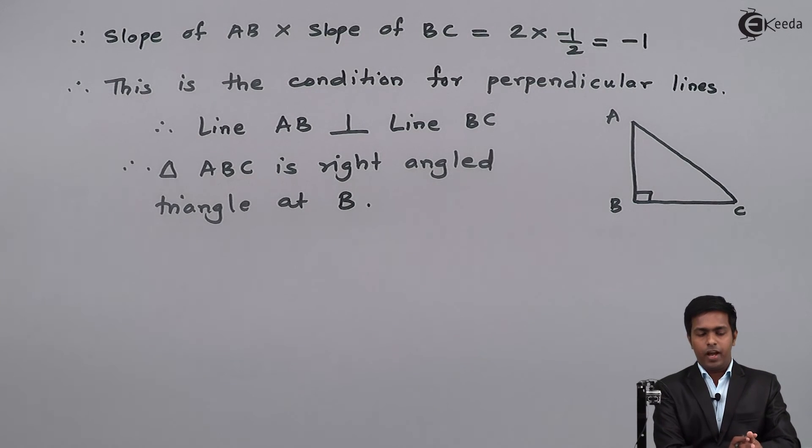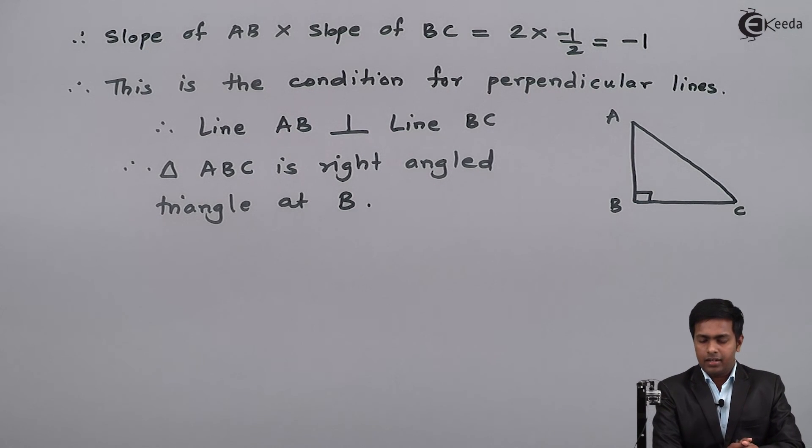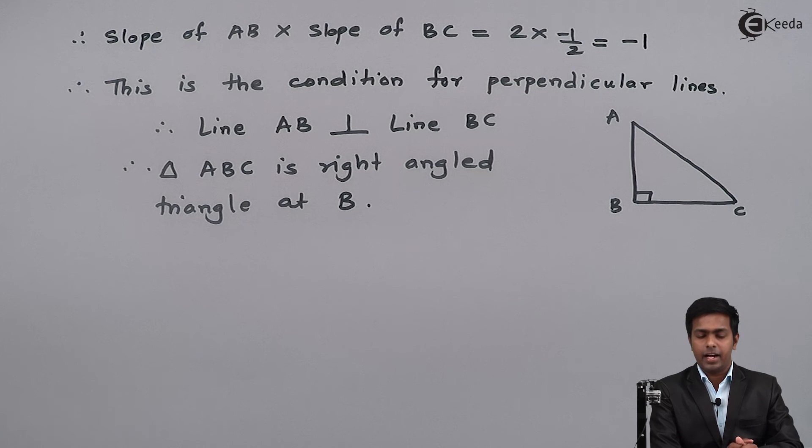We have shown that triangle ABC is right angled at B with vertices A, B, and C which are given in the problem. Thank you.